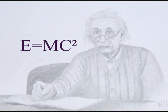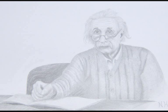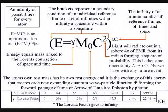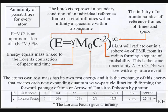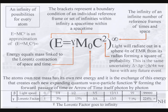Energy equals mass times the speed of light squared is the most famous equation in physics, but could this equation give us an objective understanding of the universe? All we have to do is place the Lorentz contraction of space and time between the energy and mass. Therefore the greater the energy, the greater the contraction of space and the slower time will run — mass will increase relative to this, and each reference frame can be seen as a vortex in space and time.